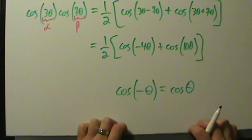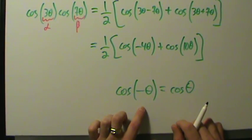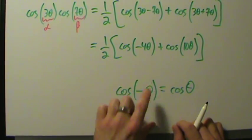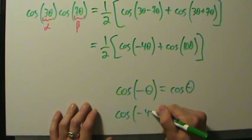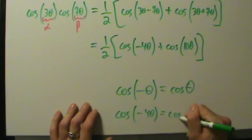Remember, that's what it means for cosine to be an even function. Here we have a negative 4θ instead of just a negative θ, but the same exact principle still applies. Cosine of negative 4θ equals cosine of 4θ.